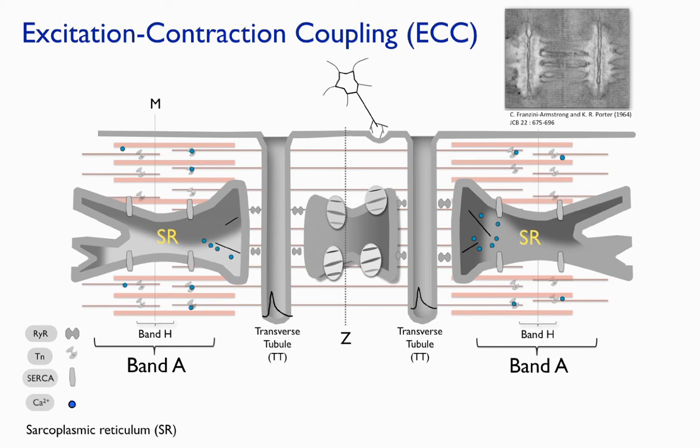So, what is a good way to measure these fast changes in the membrane potential propagating along the plasma membrane and the T-system?